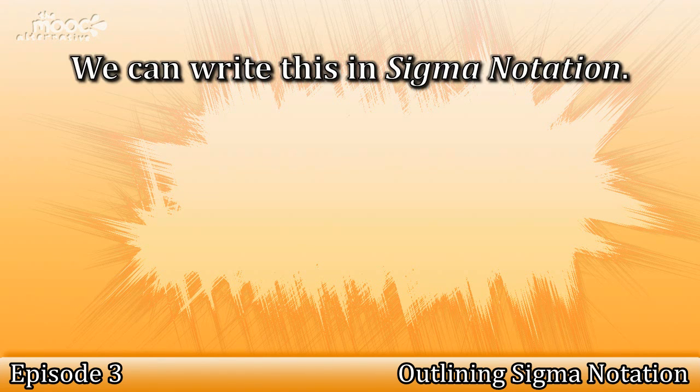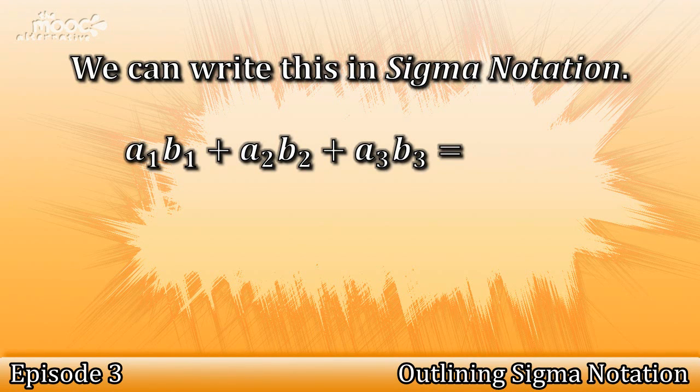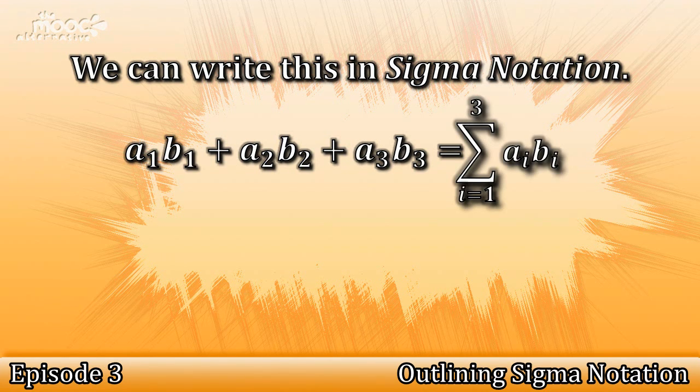We can easily write this using sigma notation. If you're unfamiliar with sigma notation, don't worry, it won't be necessary to understand it for this course. A1 B1 plus A2 B2 plus A3 B3 is equal to sigma from the sum of i equals 1 to 3, Ai Bi.